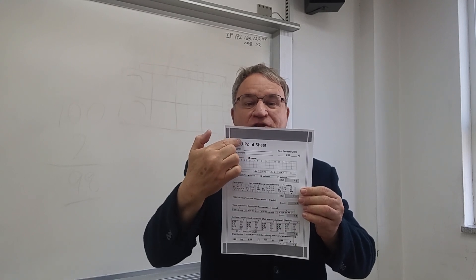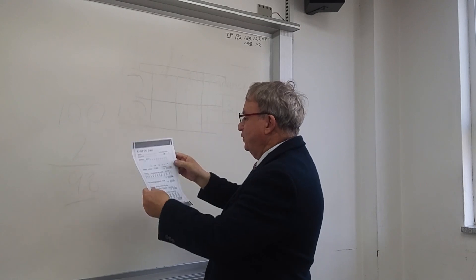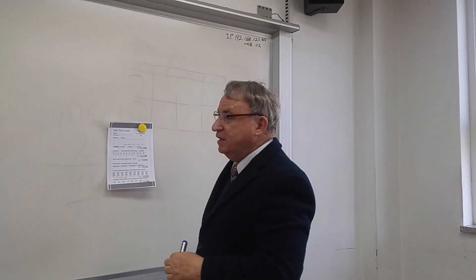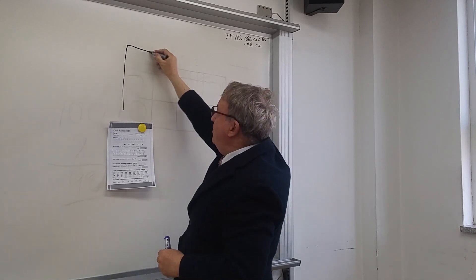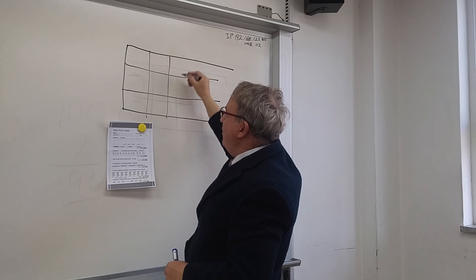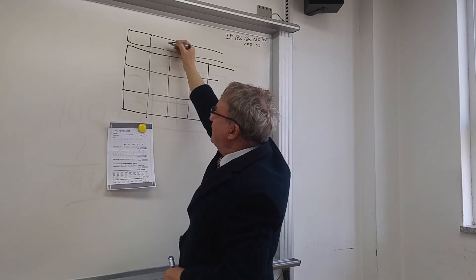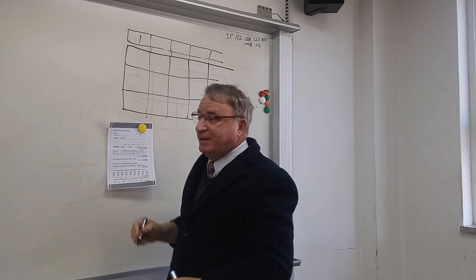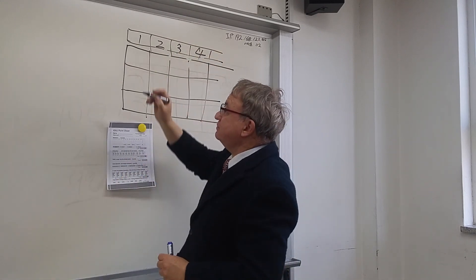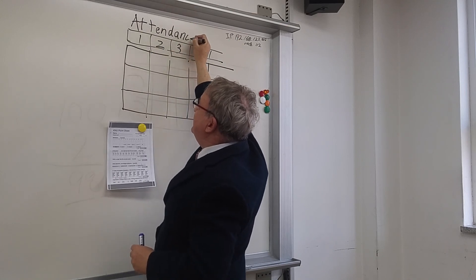And there is going to be this page — a point sheet. I'm an open grade teacher. Print this out. And you will see lines — plonk, plonk, plonk, plonk — these lines. And then you will see numbers: number one, number two, number three, number four. And above this, you will see attendance.